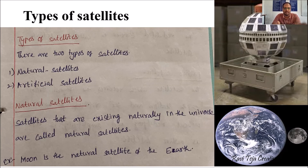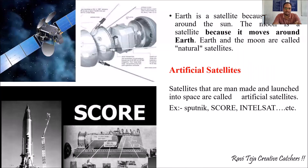Artificial satellites are man-made satellites, majorly used for communication purposes like Sputnik, Intelsat, and many more. These artificially made satellites serve purposes such as weather forecasting and telecommunication services.